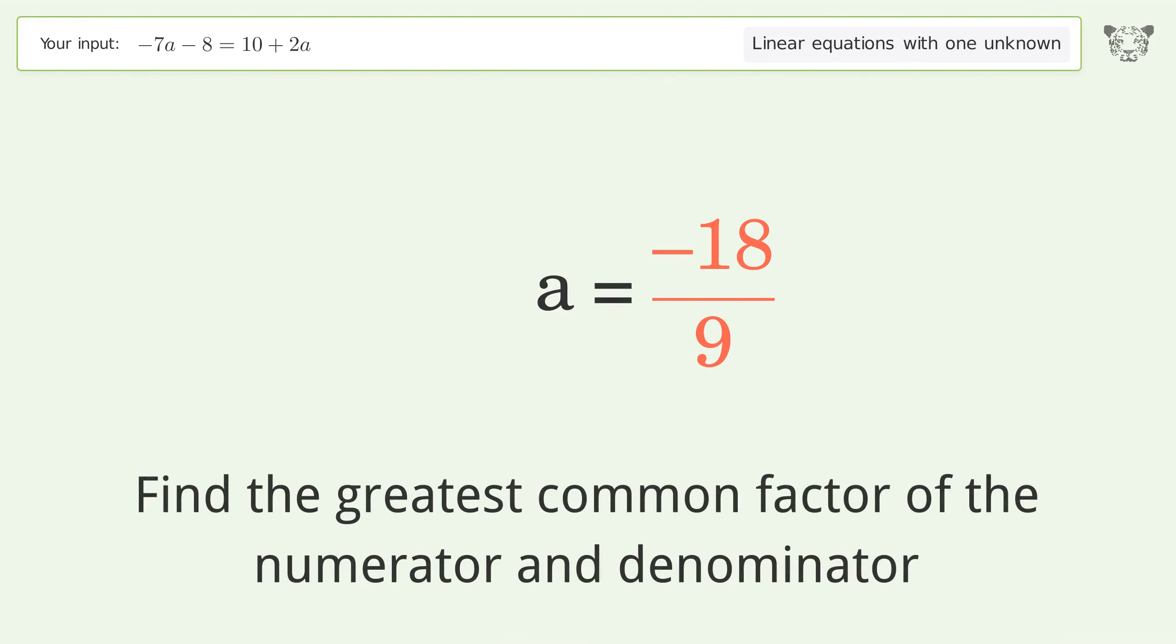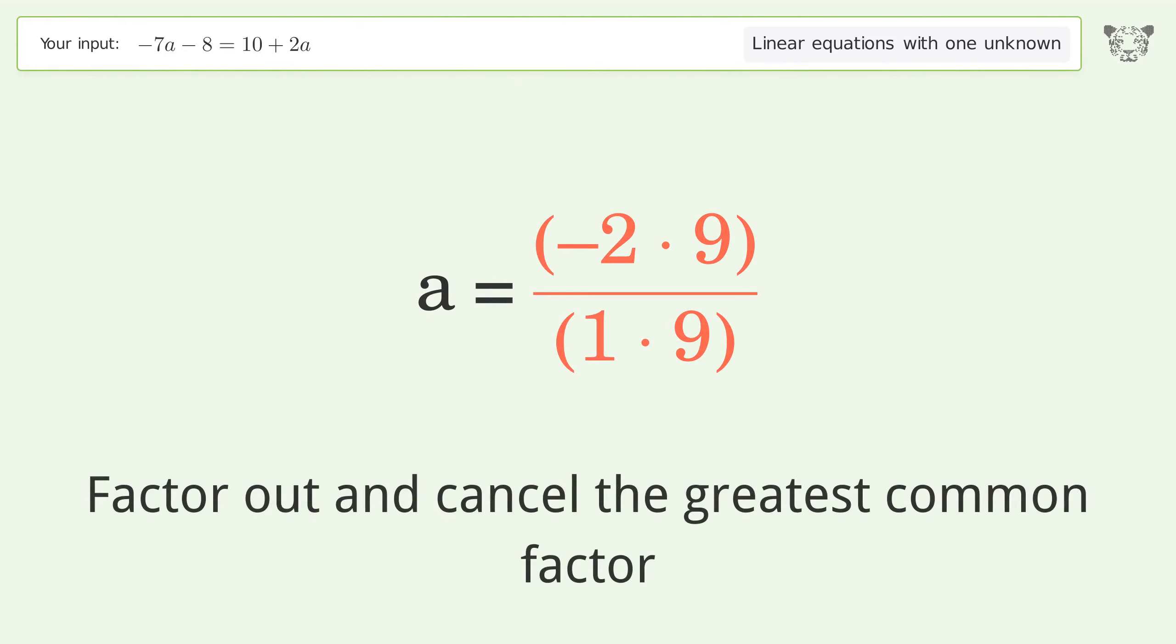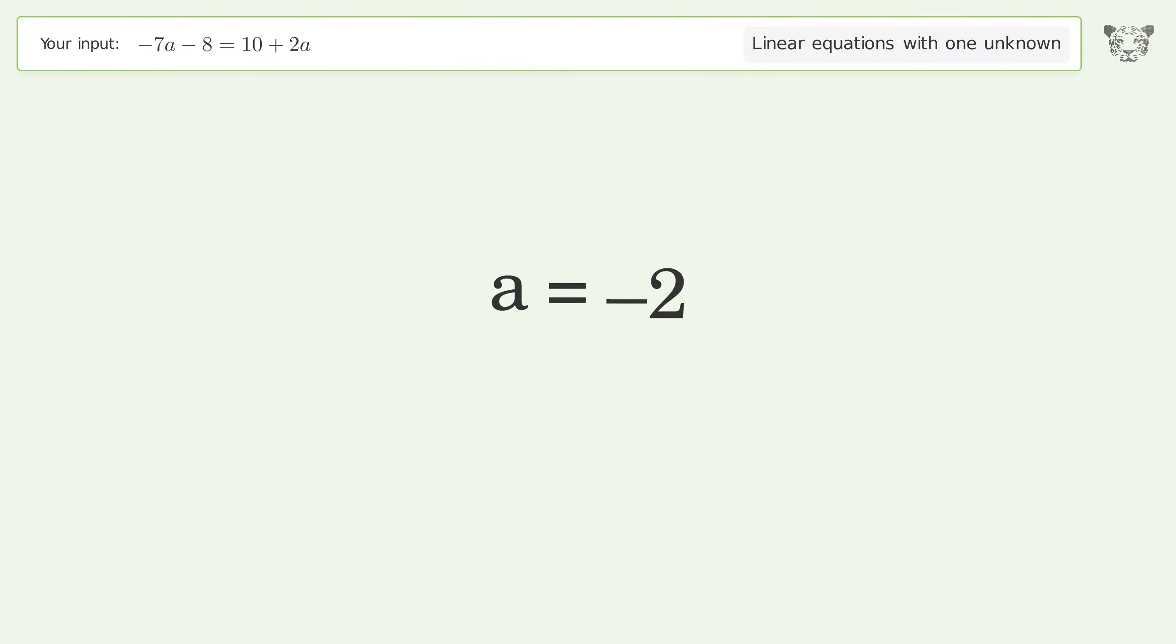Find the greatest common factor of the numerator and denominator. Factor out and cancel the greatest common factor. And so the final result is a equals negative 2.